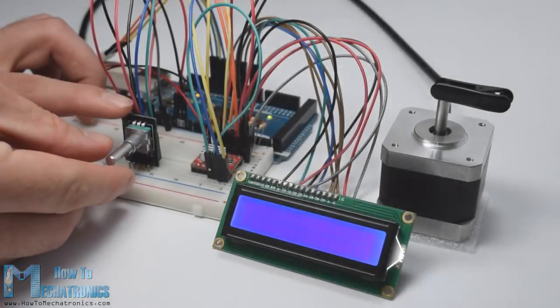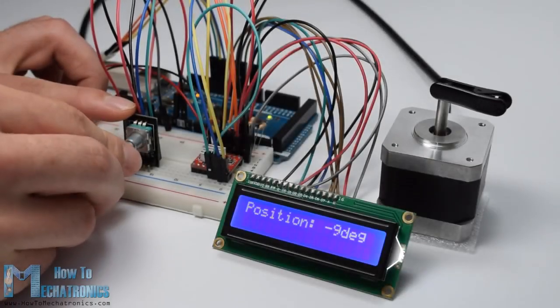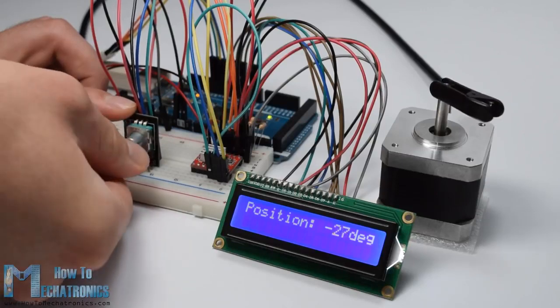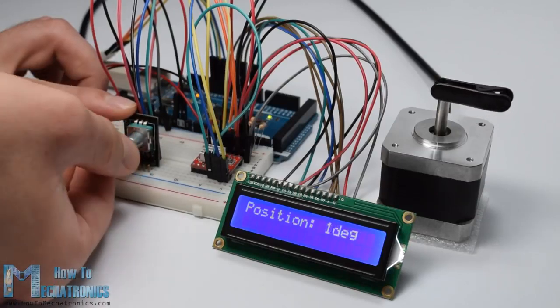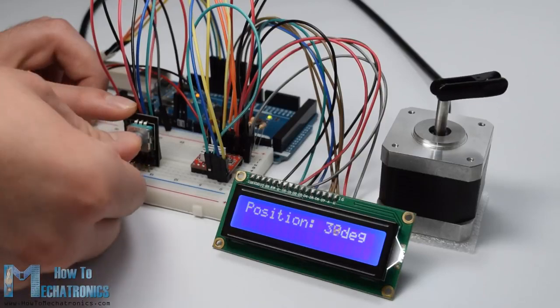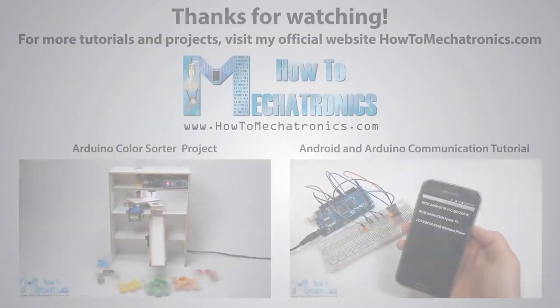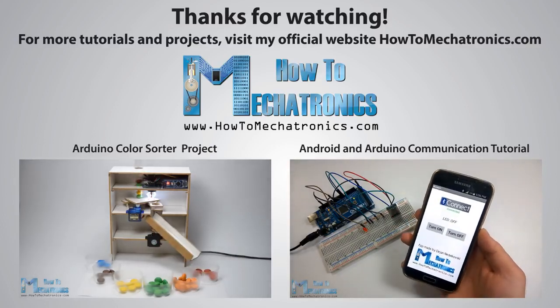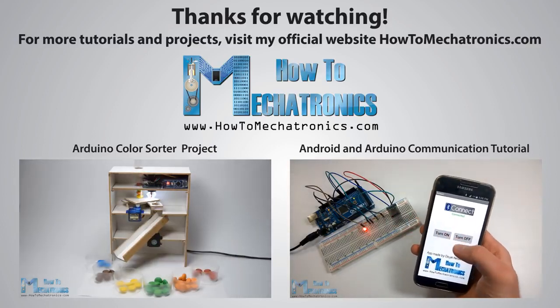In addition to this basic example, I made one more example of controlling a stepper motor position using the rotary encoder. You can find the source code of this example on my website article. Thanks for watching and for more tutorials and projects visit my official website howtomechatronics.com